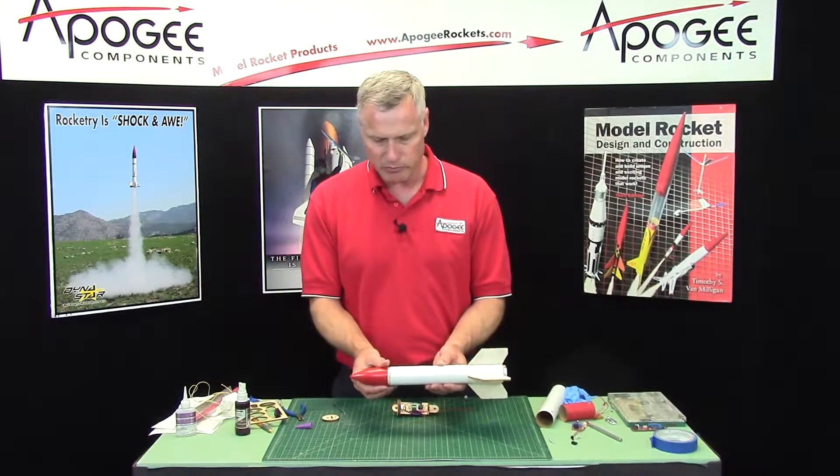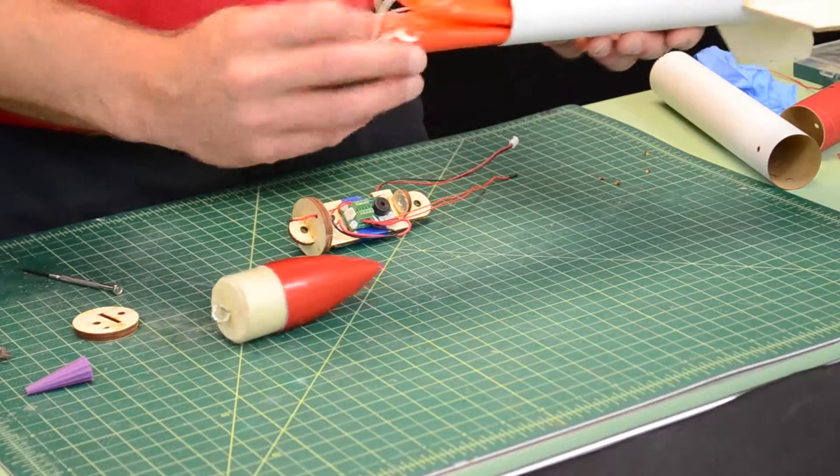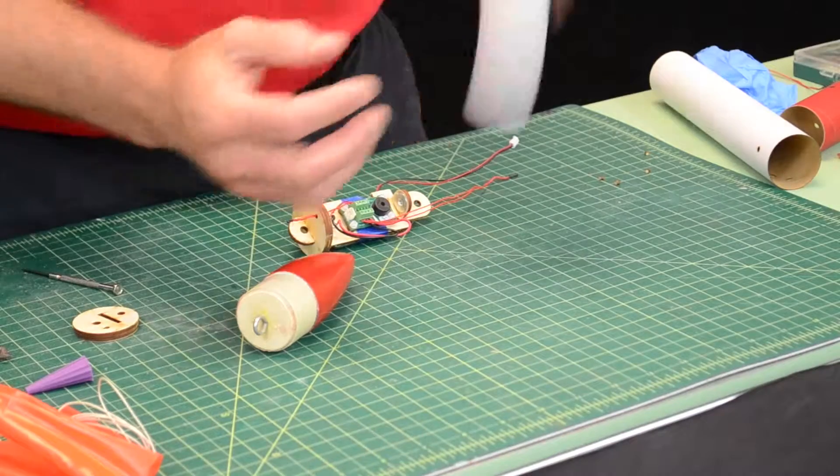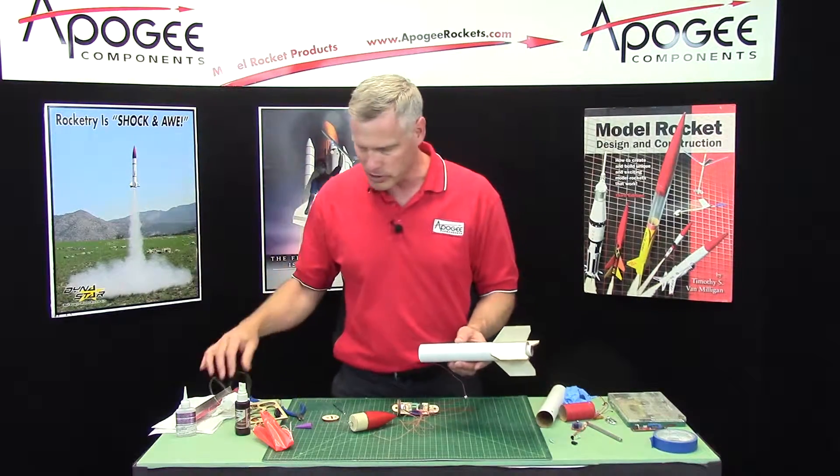This is a generic BT-60 size rocket. I've got a nose cone inside, I've got a parachute which I've already detached, and a shock cord, and you're going to need another shock cord and you're going to supply your own for this.